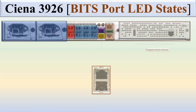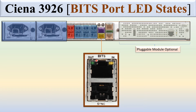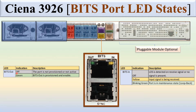Sienna 3926 BITS port LED status. You can see the BITS port — there are two LEDs: out and in. For BITS out: if off, the port is not provisioned or not active. If green, BITS out is provisioned and enabled. For BITS in: if the LED is off, loss is detected on the received signal or no signal is present. If yellow, input signal is being received. If blinking green, the port is in maintenance state or loopback.